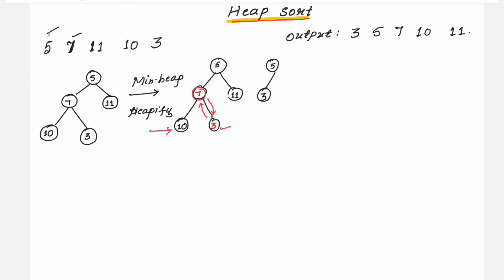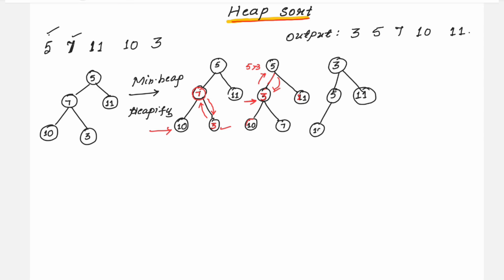After swapping, 3 comes in the place of 7. Now at the next level we have elements 3 and 11, and the parent node is 5. The parent node 5 is greater than child node 3, so you have to swap again. Now check whether this is a min heap: the parent node is 3, which is lesser than 5 and 11. Next level, 5 is lesser than 10 and 7. The min heap has been constructed.